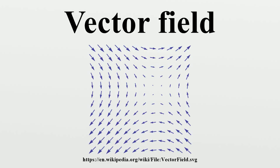Definition: Vector fields on subsets of Euclidean space. Given a subset S in Rn, a vector field is represented by a vector-valued function V: S → Rn in standard Cartesian coordinates. If each component of V is continuous, then V is a continuous vector field, and more generally V is a Ck vector field if each component is k times continuously differentiable.